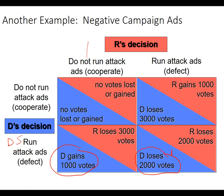The Republican: if the Democrat doesn't run an attack ad, the Republican can either gain nothing or gain 1,000 votes — they're going to run one. If the Democrat does run an attack ad, the Republican can lose 3,000 or lose 2,000 votes — so they run an attack ad to lose fewer. Unfortunately, this is our Nash equilibrium in many elections across the country. This is a Prisoner's Dilemma again. It would be better for society — and actually for the candidates too, because those ads are expensive — if they stayed in the cooperative cell. It's up to policymakers to think through how to get away from these situations.